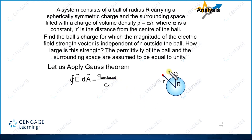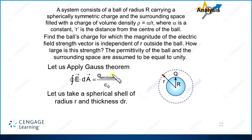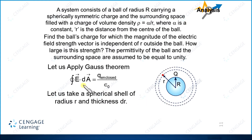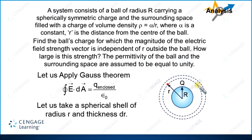For this purpose, we will select a spherical Gaussian surface. For calculating the total charge enclosed by this Gaussian surface, we need to select a spherical shell of thickness dr. We can now apply Gauss's law. On this Gaussian surface, the electric field will be constant, and the direction of electric field will be away from the center if the charge is positive. The left-hand term equals E multiplied by the area of this Gaussian surface, equal to 4 pi r squared.